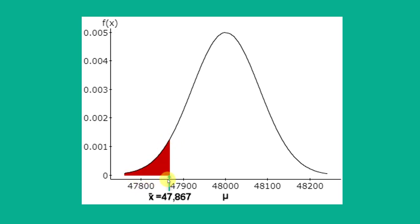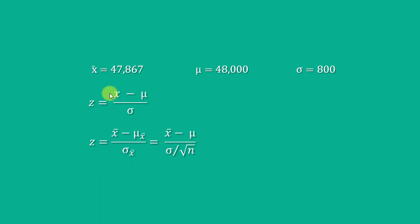So we're interested in this area under the curve in red here. Again, we're given the mean of the sample x bar of 47,867, the mean of the population of tires of 48,000, and the standard deviation of the population of tires sigma of 800.